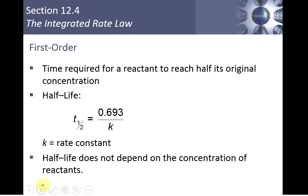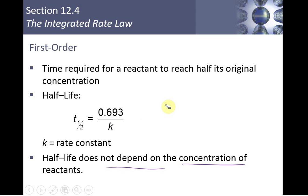For a first-order reaction, you can calculate the half-life — the time it takes for the reactant to reach half its original concentration. The half-life equals 0.693 over the rate constant K. Notice it does not depend on the concentration at all; there's no [A] involved. Keep this in mind for next week's lab — it will help you out.